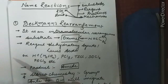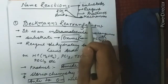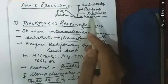Hello everyone. Today we will start the sequence of name reactions of organic chemistry. First of all for any name reactions we must know these four things: the substrate, the reagent, the product and the mechanism.